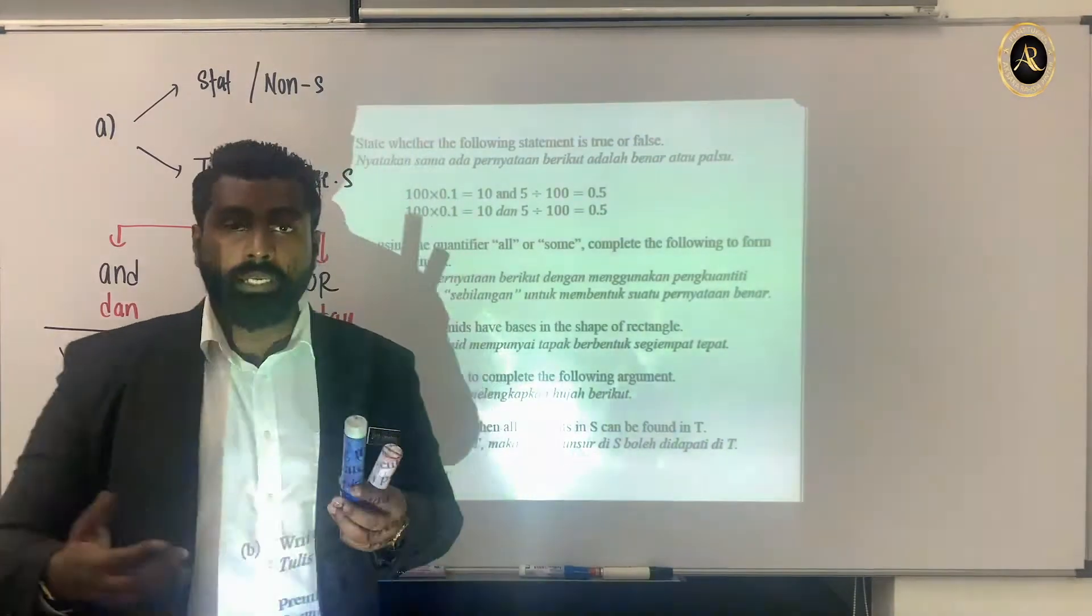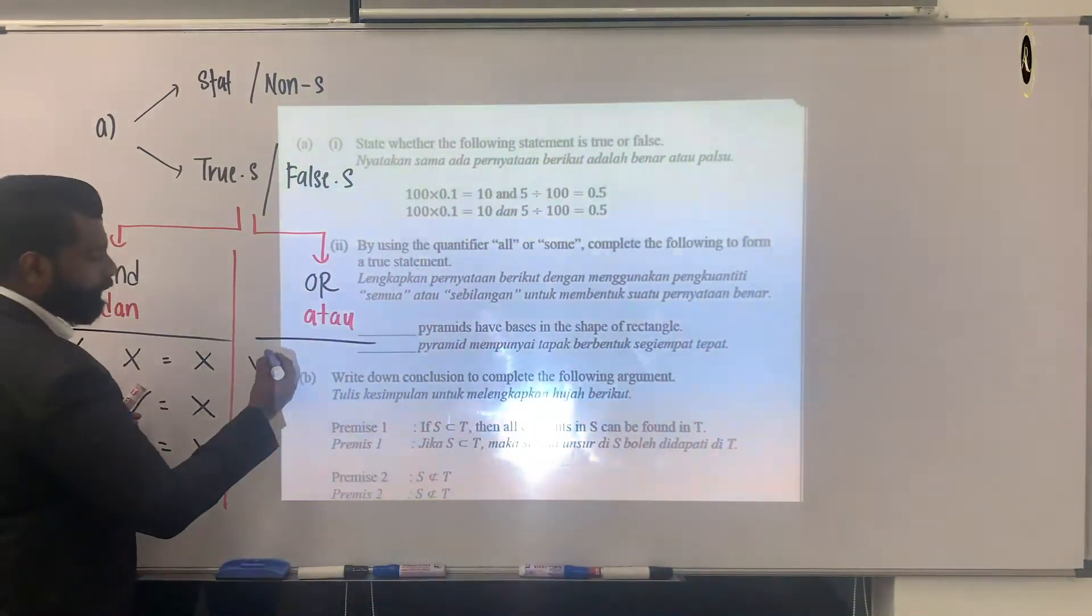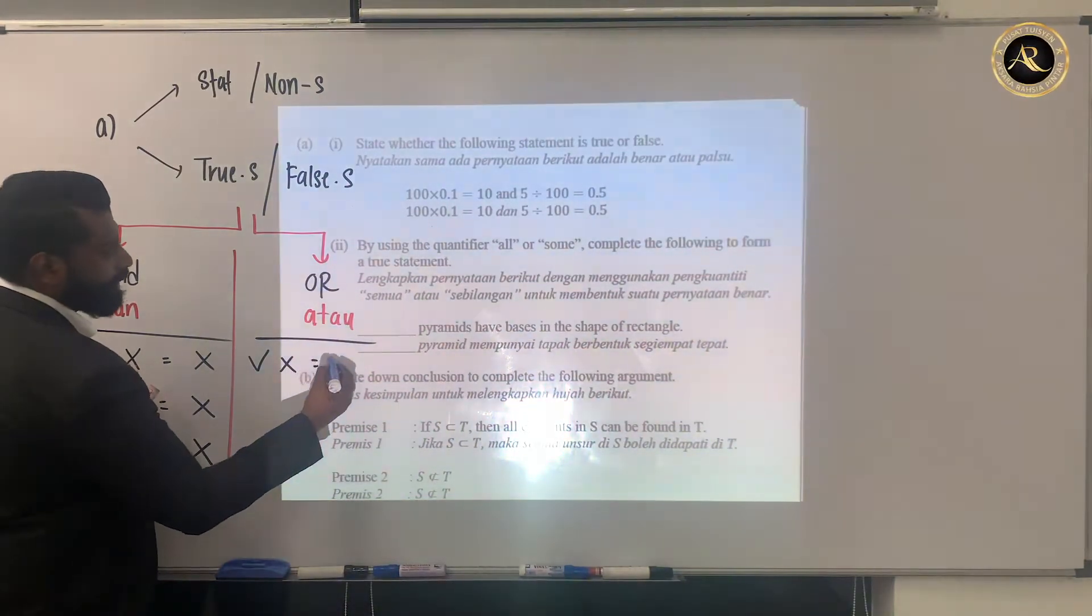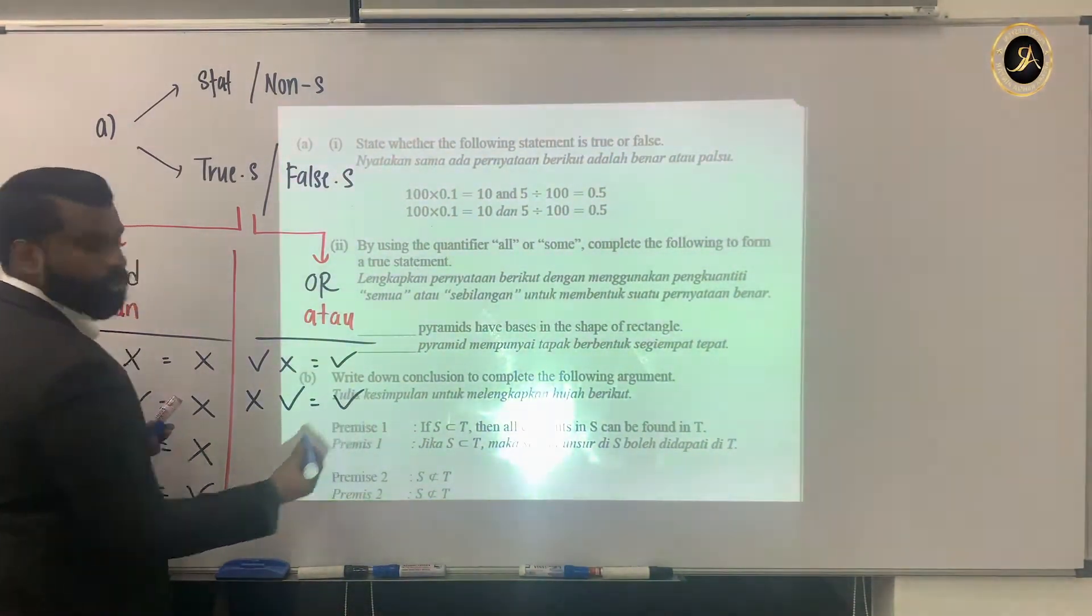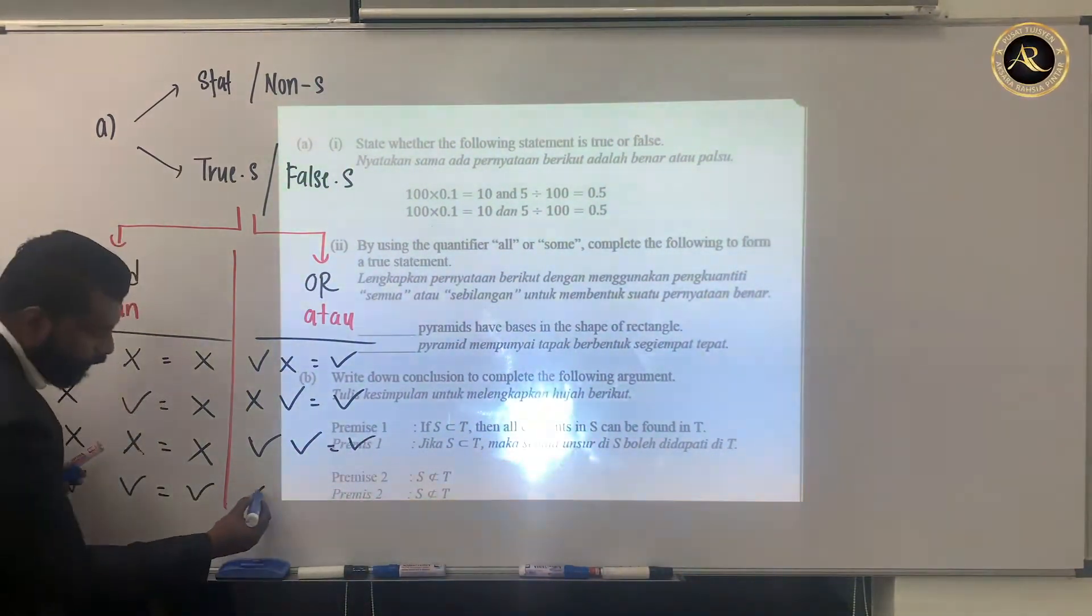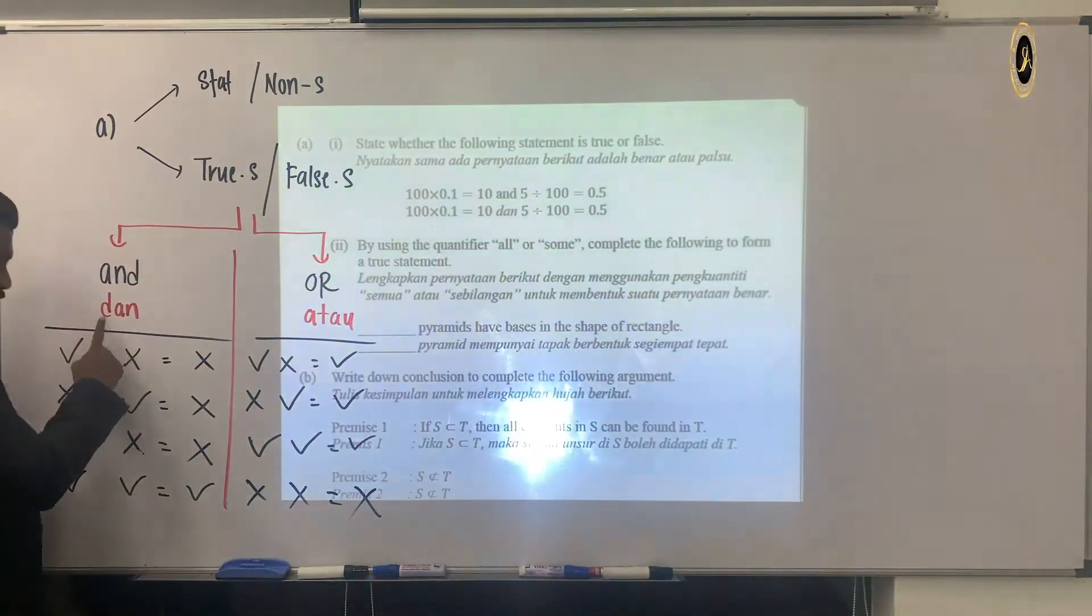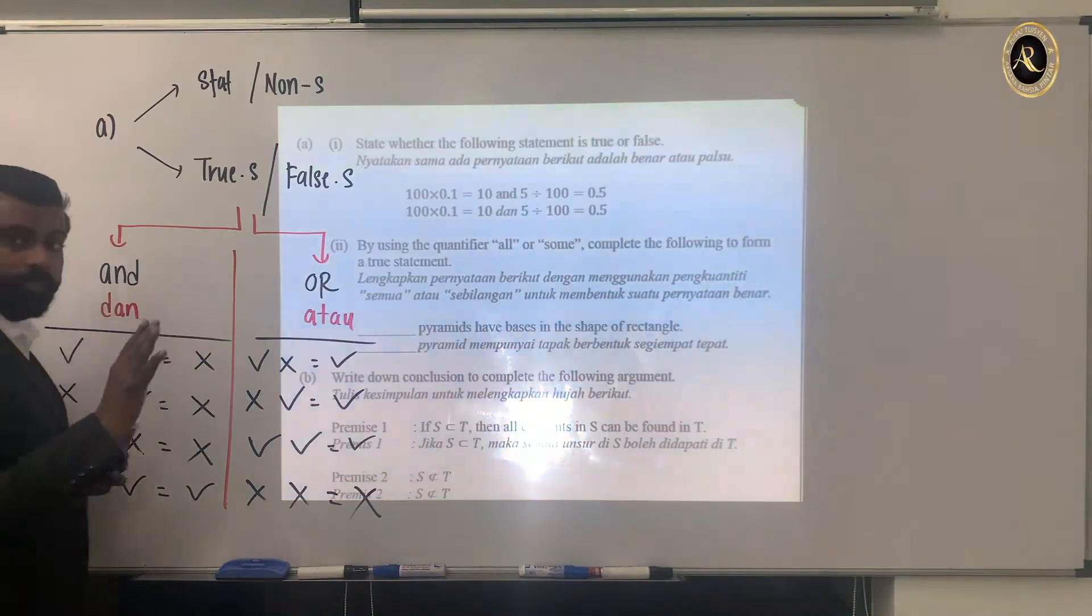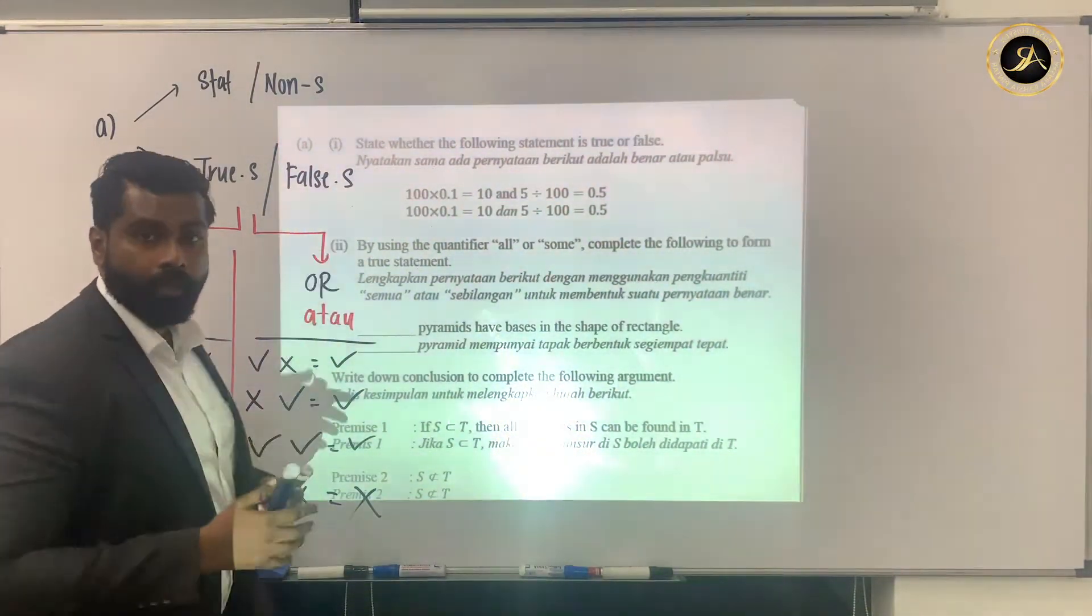For 'or', it's a bit different. For 'or', one correct and one wrong—the answer is correct. One wrong and one correct—answer is correct. Both correct, answer is correct. Both wrong, then only the answer is wrong. So the conclusion: for 'and', any one wrong, entire answer is wrong. For 'or', any one correct, entire answer is correct.